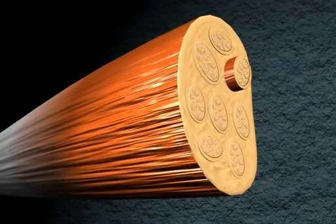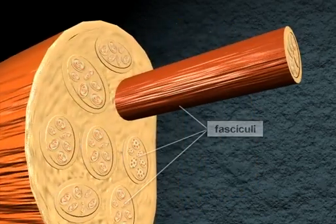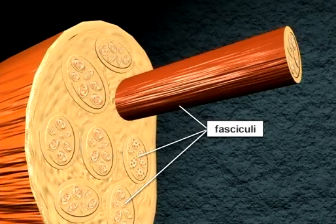Skeletal muscles are composed of fasciculi, bundles of individual muscle cells or fibers.